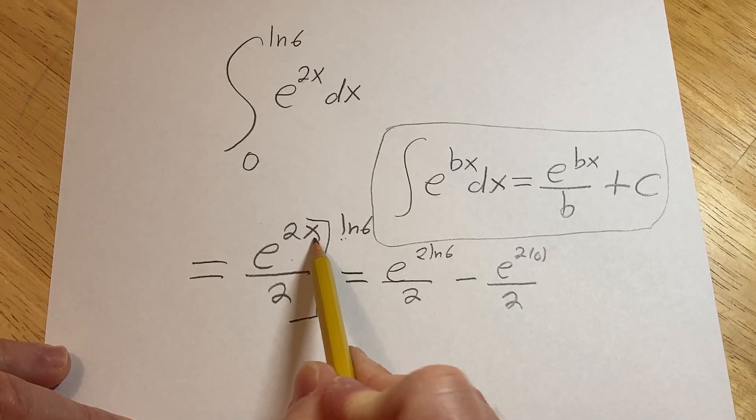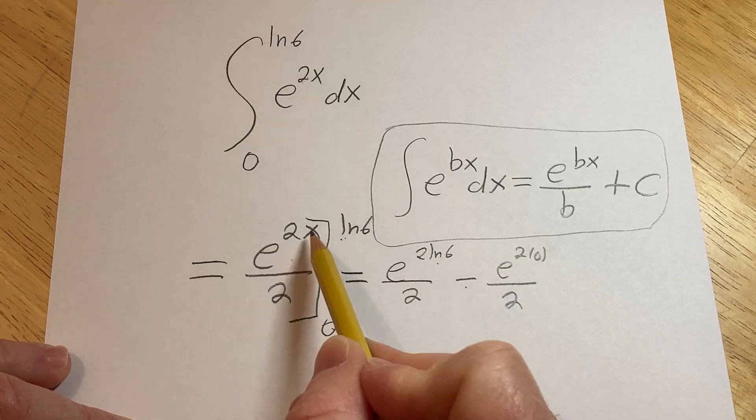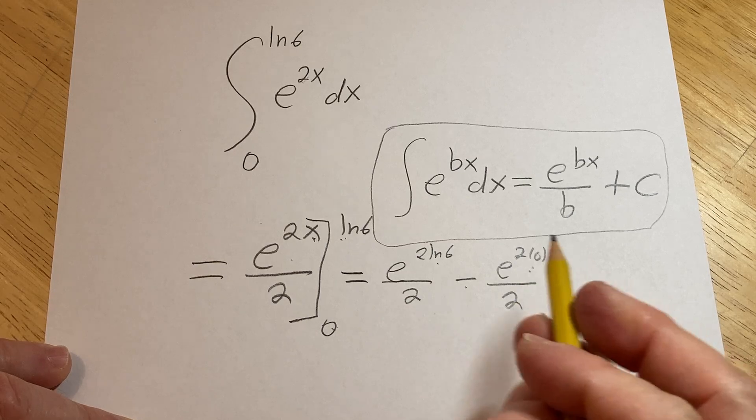Right? So again, putting the ln 6 where the x is gives us that, minus, and then putting the 0 where the x is gives us that. Very nice.